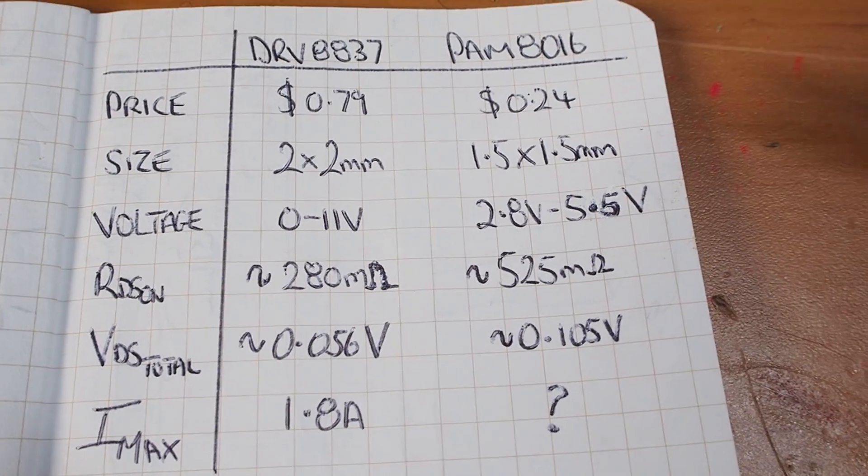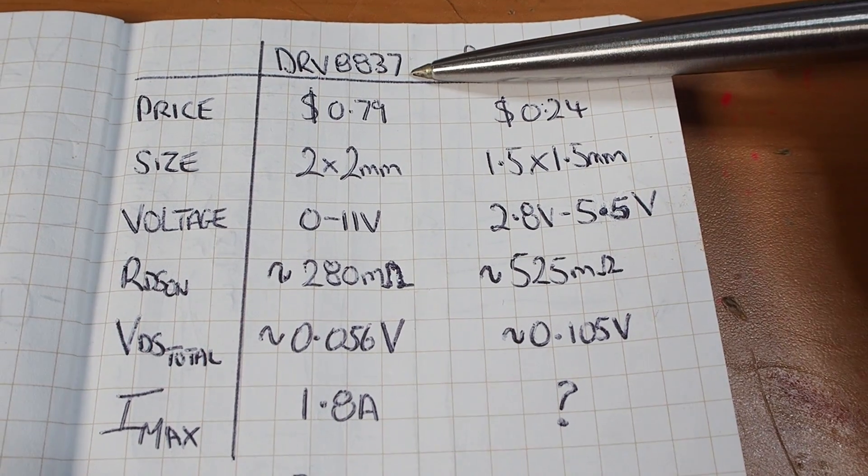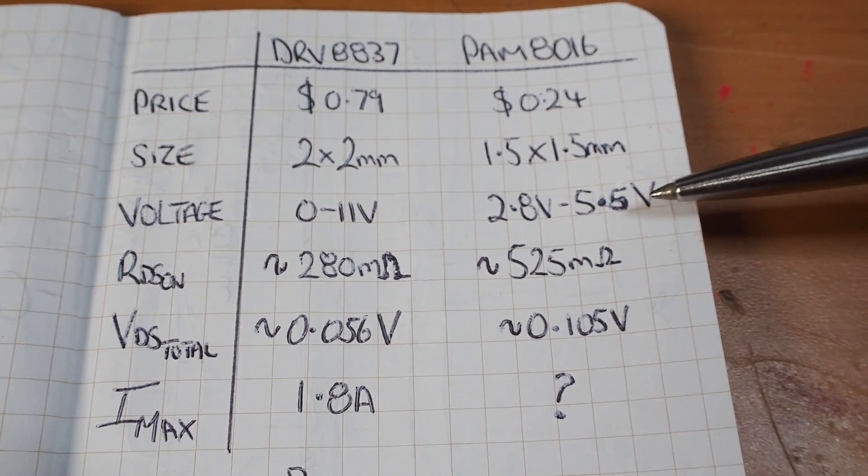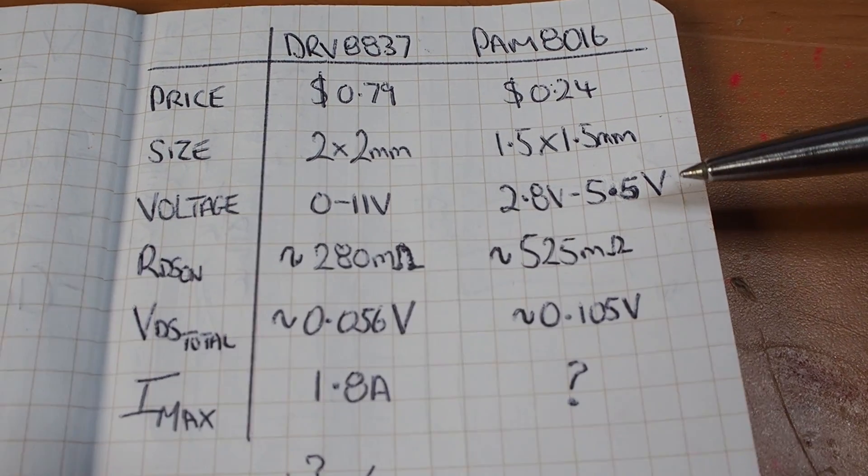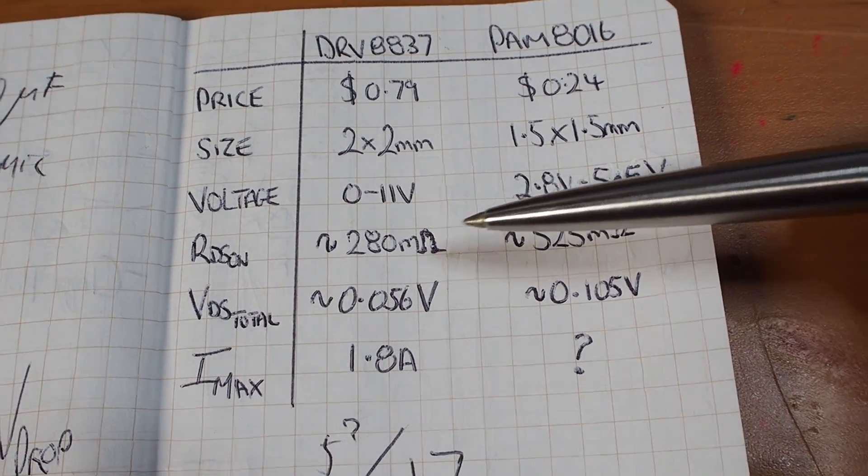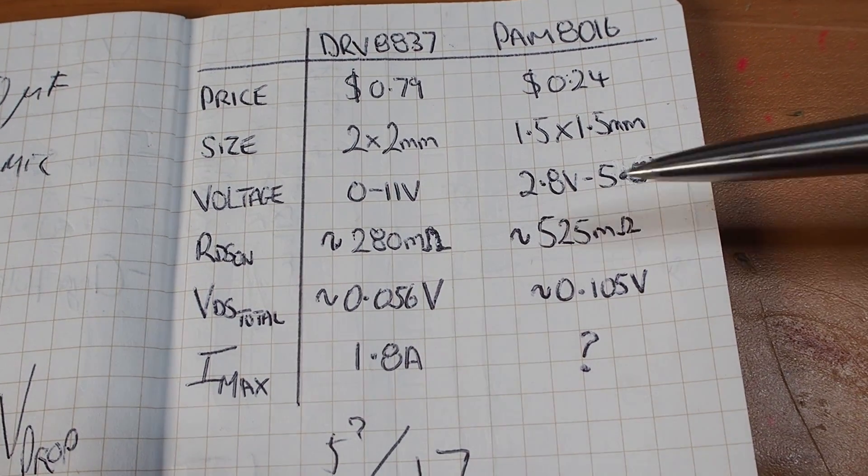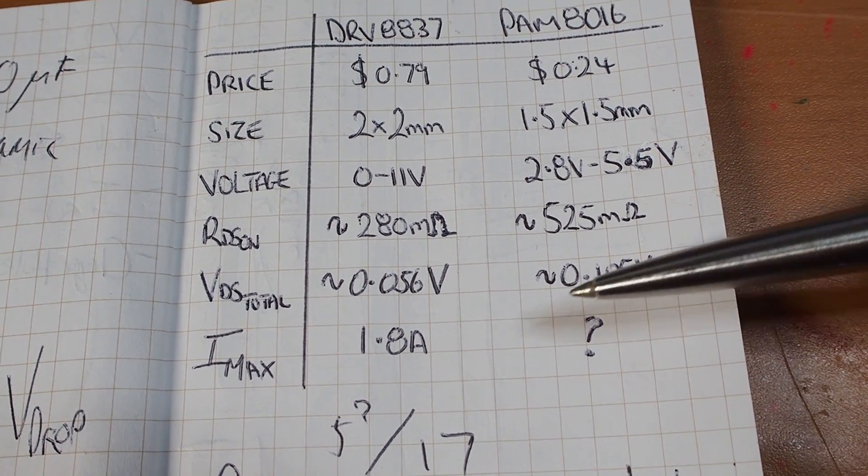So I made this little table to try and compare its main specs to the DRV8837, but basically the only difference is that it is rated at a lower voltage, which for us is actually fine because we want to power it with a maximum of 5 volts. The downside is its RDS-on because it's around two times higher, and this is going to create a voltage drop of around 100 millivolts.